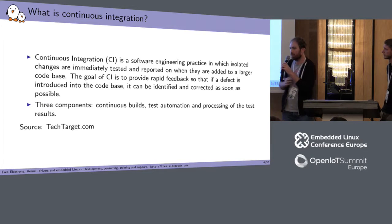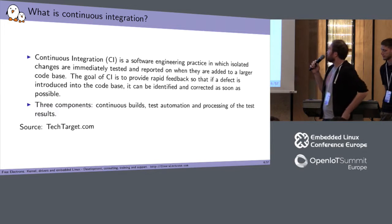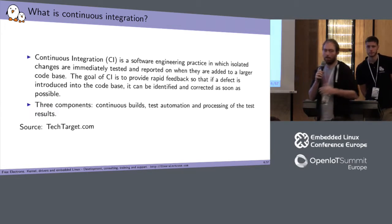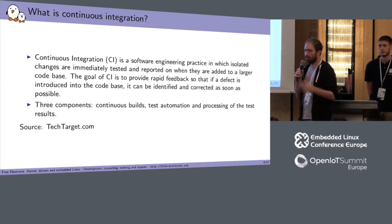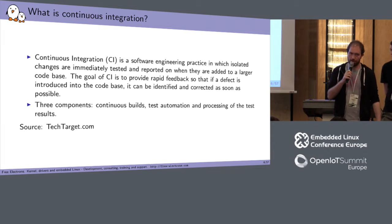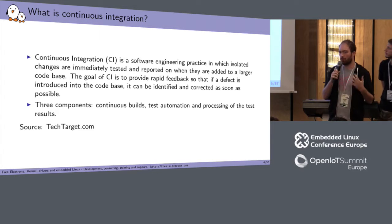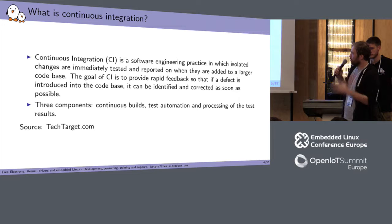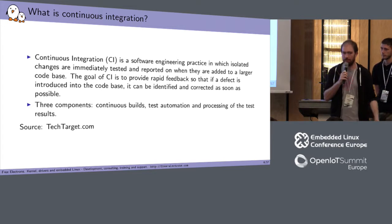Introduction: what is continuous integration? It's a software engineering practice in which we test changes immediately after we make them, to be sure they're not breaking the project. When you have a large project, you may work on a small part that can impact many other components. Continuous integration will help you test it across many different use cases, different configurations, and in our case, a Linux kernel on many boards. The goal is to catch bugs or regressions early, before a new release.